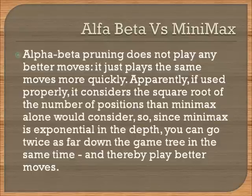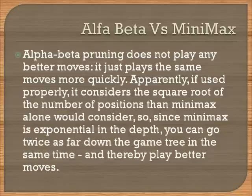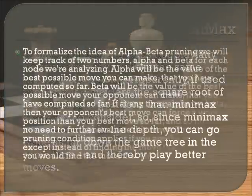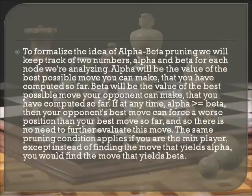Alpha-Beta pruning does not play any better moves — it just plays the same moves more quickly. If used properly, it considers the square root of the number of positions that Minimax alone would consider. Since Minimax is exponential in depth, you can go twice as far down the game tree in the same time, thereby playing better moves. To formalize the idea of Alpha-Beta, we keep track of two numbers — Alpha and Beta — for each node we are analyzing, hence the name Alpha-Beta pruning.